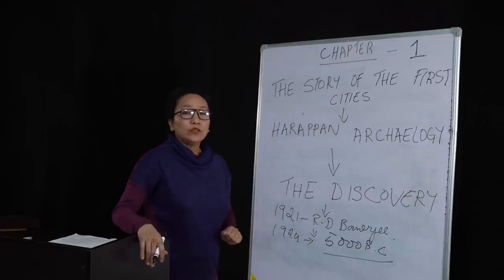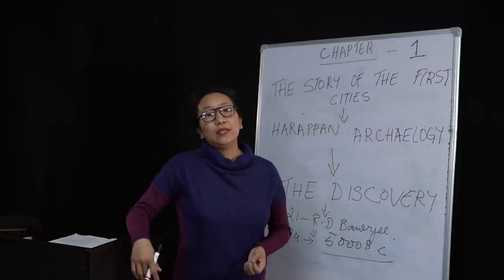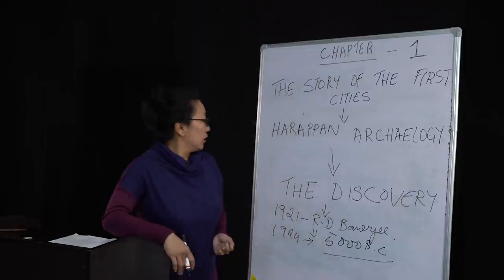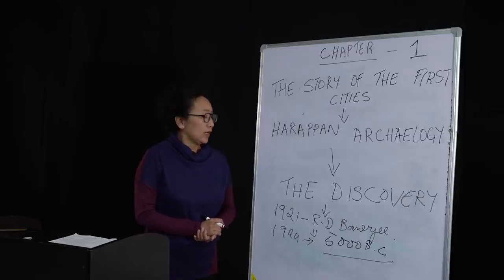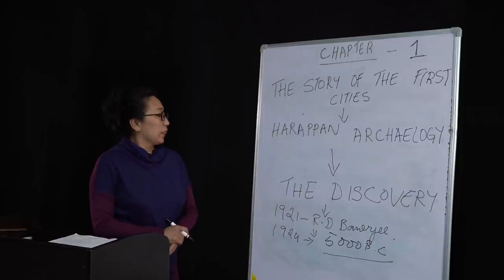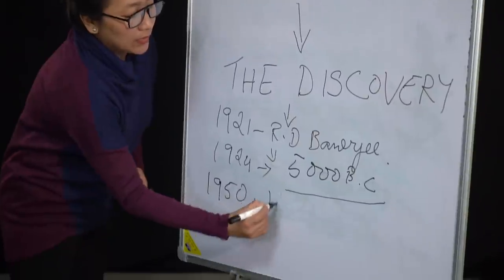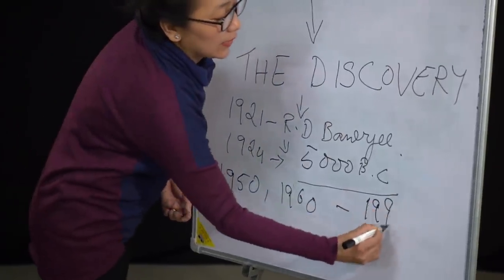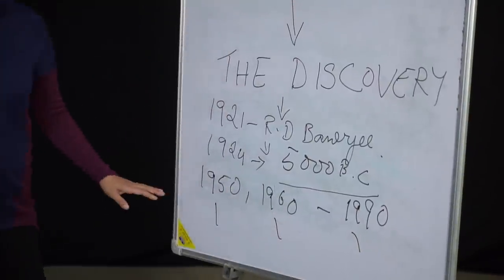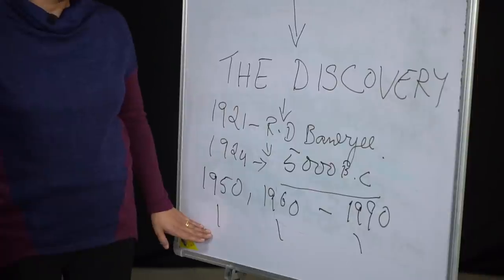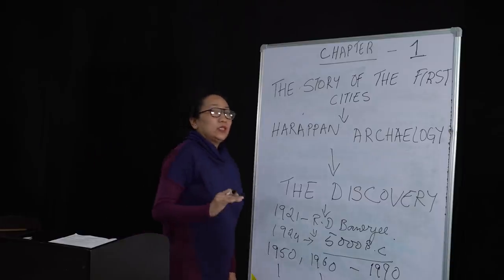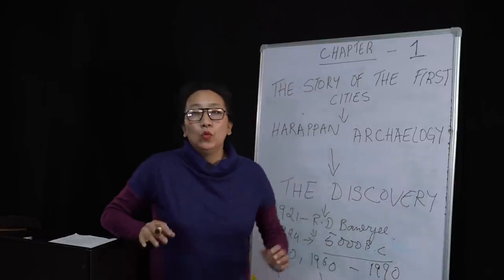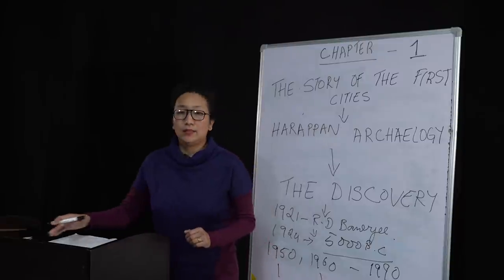A lot of inquiry came both nationally and internationally about this massive discovery. Researchers and historians came and applied different techniques, especially stratigraphy and surface exploration. By 1950, 1960, and the latest in 1990, new sites were discovered — Lothal in 1950, Kalibangan in Rajasthan, and in 1990 another place in Gujarat called Dholavira. All these excavations and sites confirmed that indeed a great civilization had existed at that time.